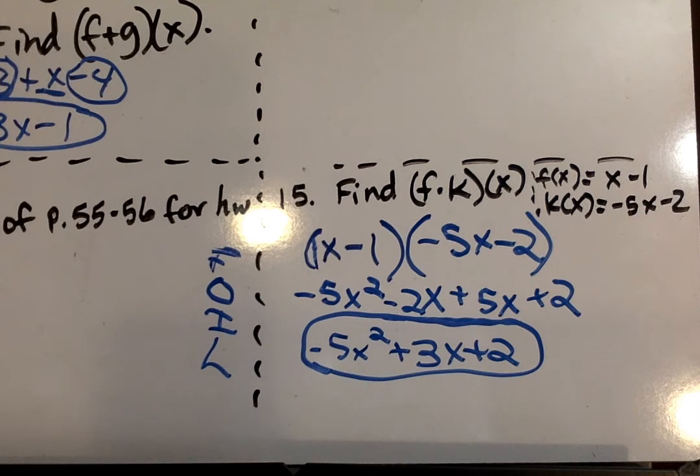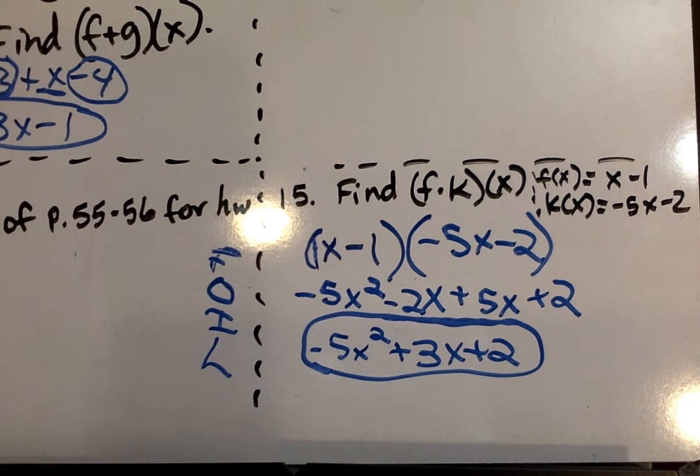Again, go ahead and finish the back side of this page. Page 55 and 56 for homework. And do not forget to cross out that x squared on the new f of x on page 55. All right, students. You can get this. You rock.